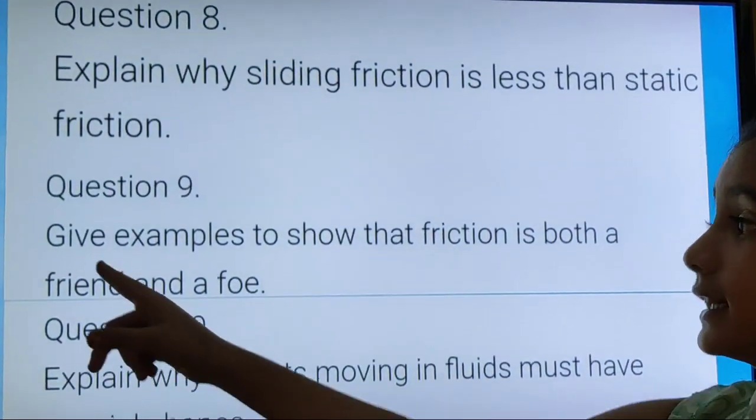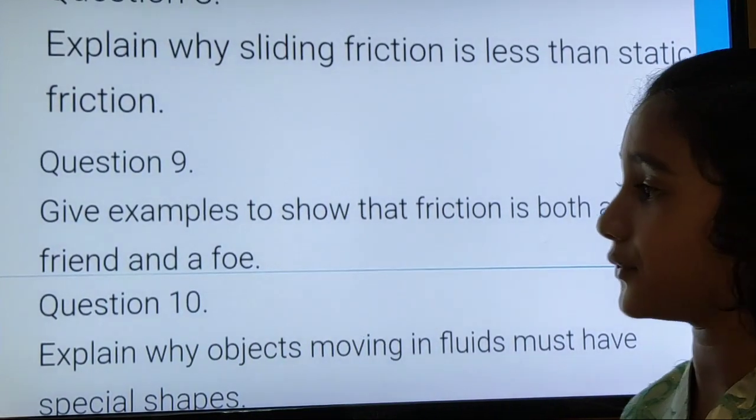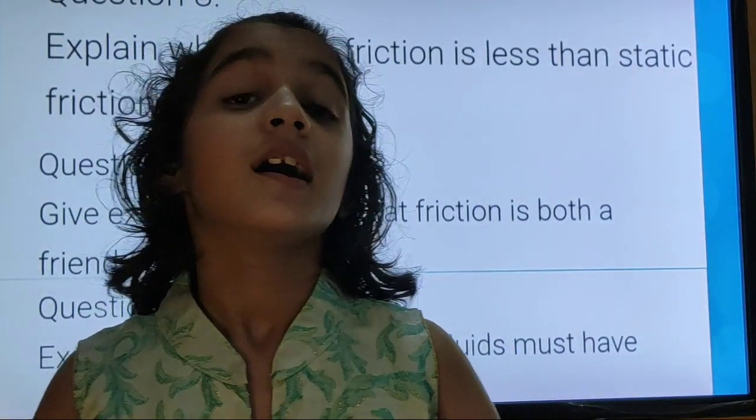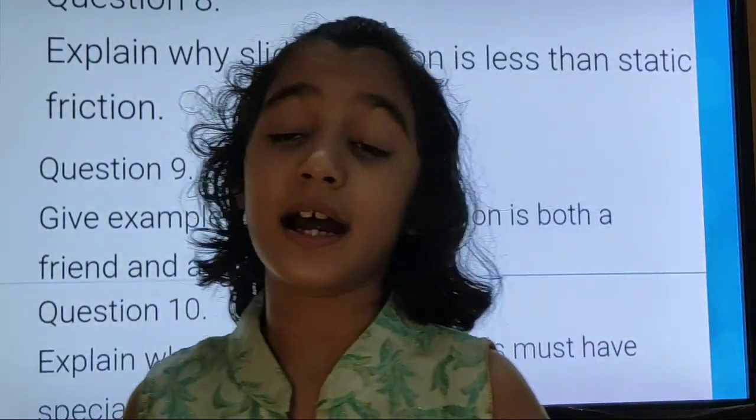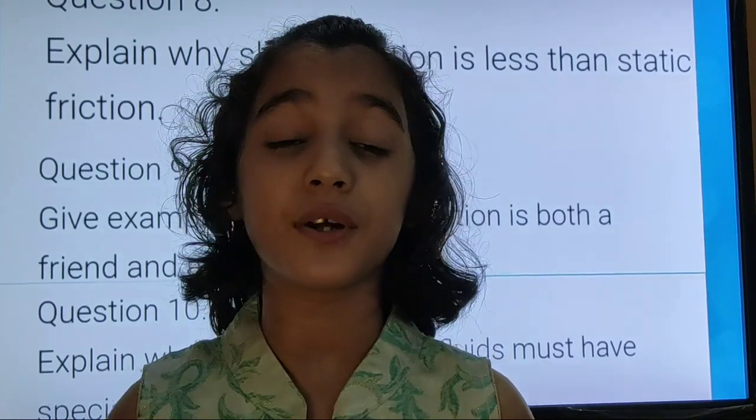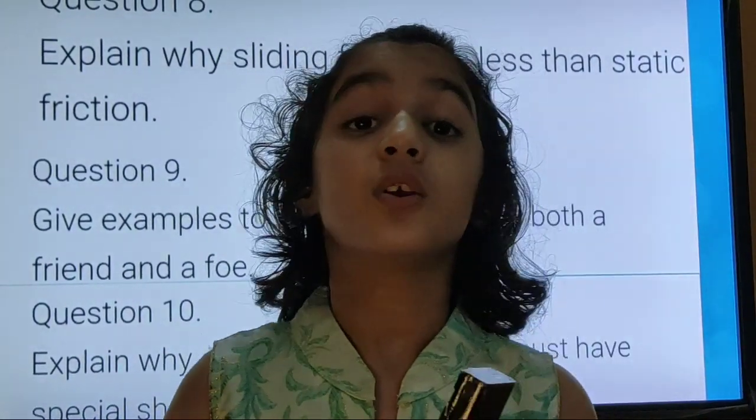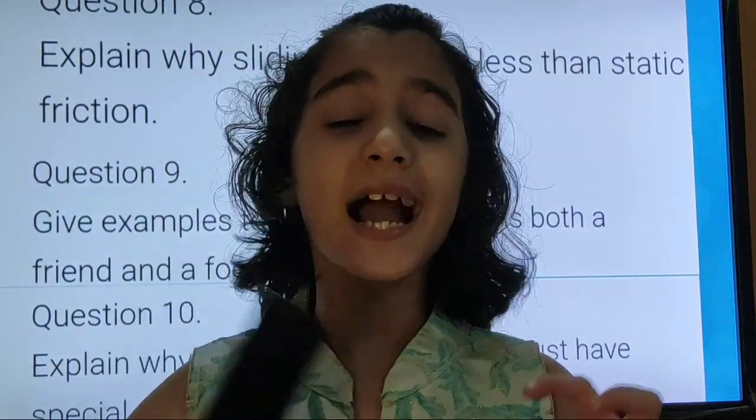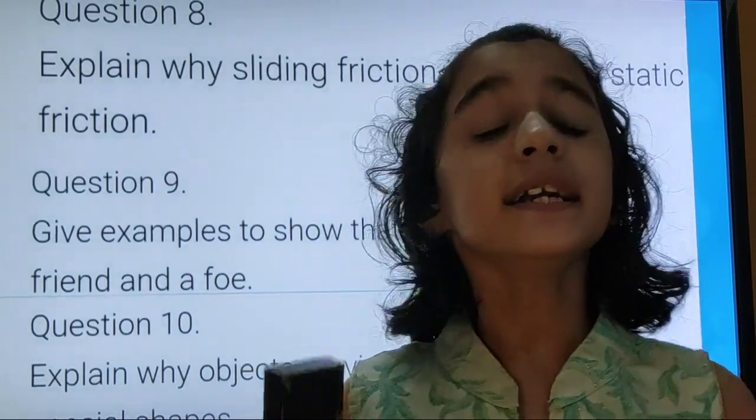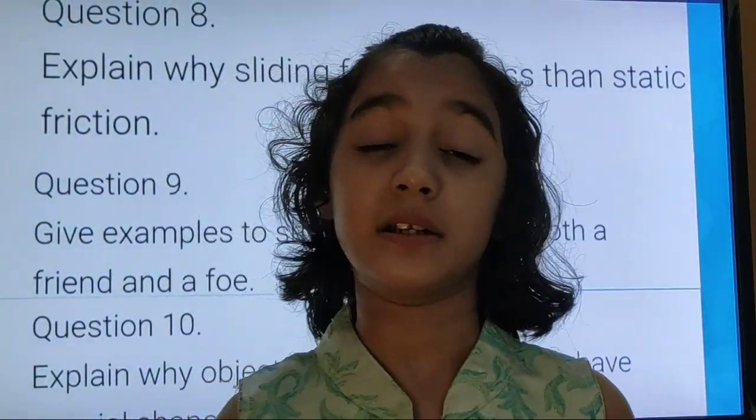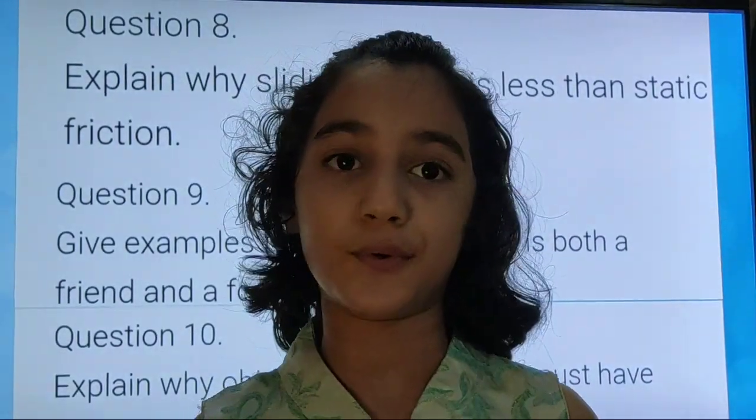Question number 9. Give examples to show that friction is both a friend and a foe. Examples that indicate friction is both a friend and a foe: Number 1, Friction as a friend. It allows us to grip and catch any moving object. It helps us to ride. It helps us to walk comfortably on the floor.